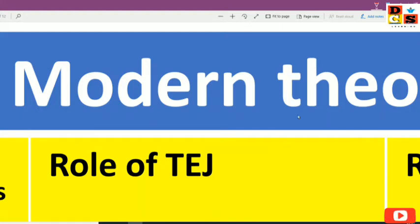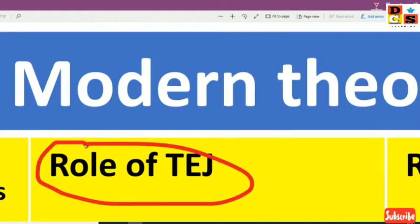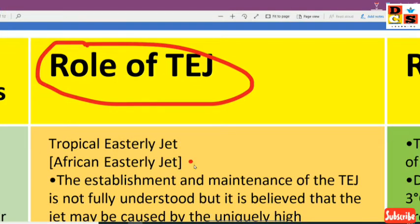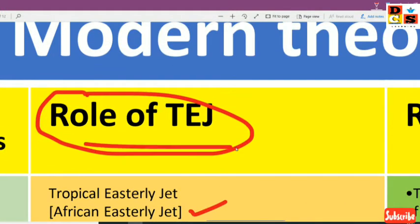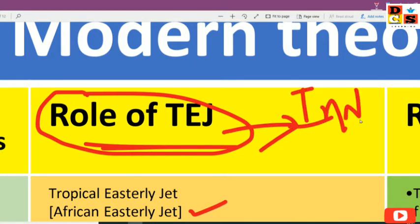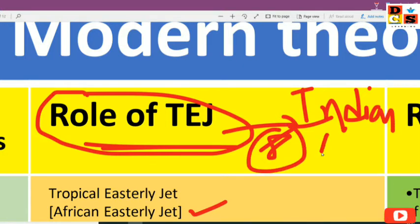Hello friends! Welcome to DCS Learning. In this video, we will discuss the role of the Tropical Easterly Jet Stream, which is also called the African Easterly Jet, and what impact it has on the Indian Monsoon. This is the eighth part of our Indian Monsoon series.